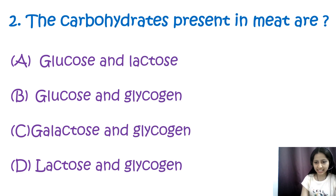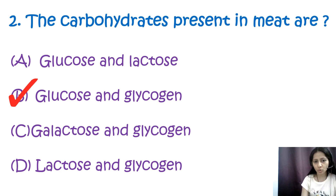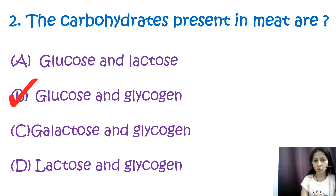Question 2: The carbohydrates present in meat are — options are glucose and lactose, glucose and glycogens, galactose and glycogens, and lactose and glucose. The correct answer is option B, glucose and glycogens. The main source of carbohydrate in the animal body is the liver, which contains about half of the total carbohydrate. Carbohydrates are stored as glycogens mainly in the liver and muscles, while glucose is found in the blood. Lactose and galactose are not typically found in meat.